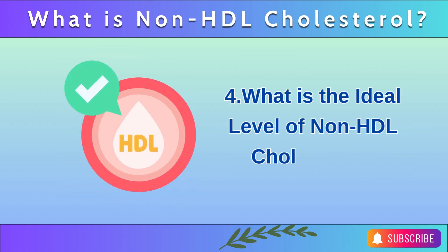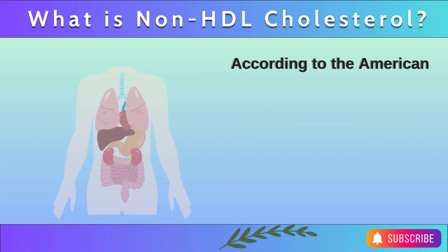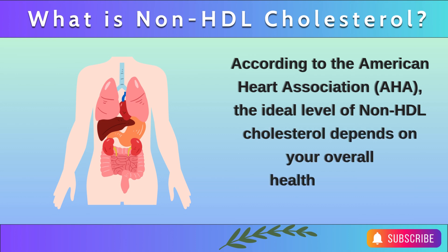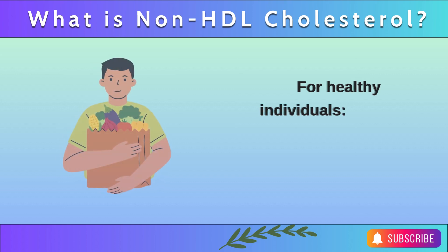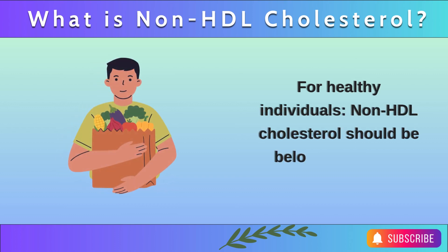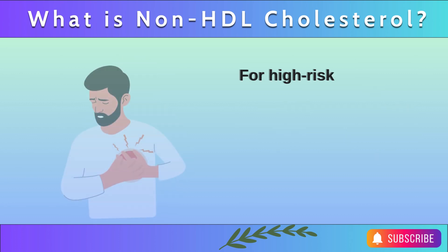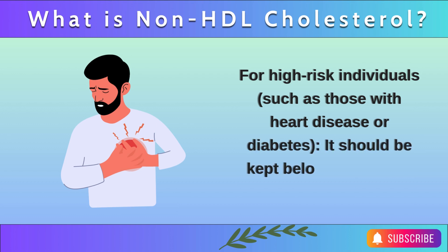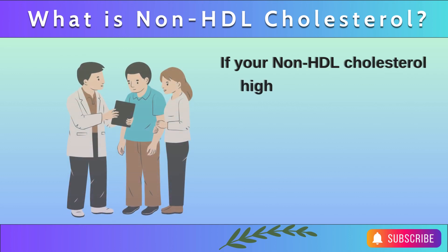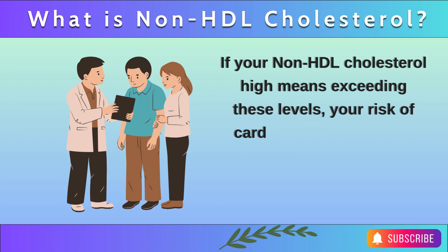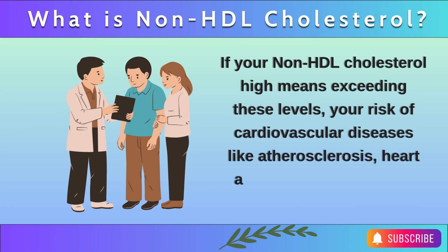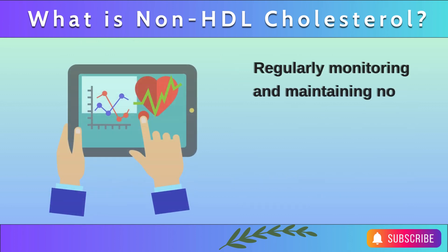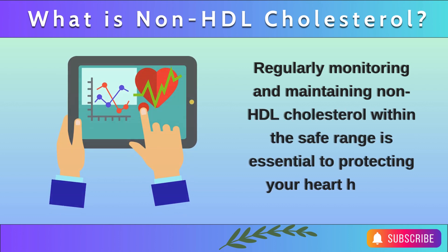What is the ideal level of non-HDL cholesterol? According to the American Heart Association (AHA), the ideal level depends on your overall health condition. For healthy individuals, non-HDL cholesterol should be below 130 mg/dL. For high-risk individuals, such as those with heart disease or diabetes, it should be kept below 100 mg/dL. If your non-HDL cholesterol exceeds these levels, your risk of cardiovascular diseases like atherosclerosis, heart attacks, and strokes will increase significantly. Regularly monitoring and maintaining non-HDL cholesterol within the safe range is essential to protecting your heart health.